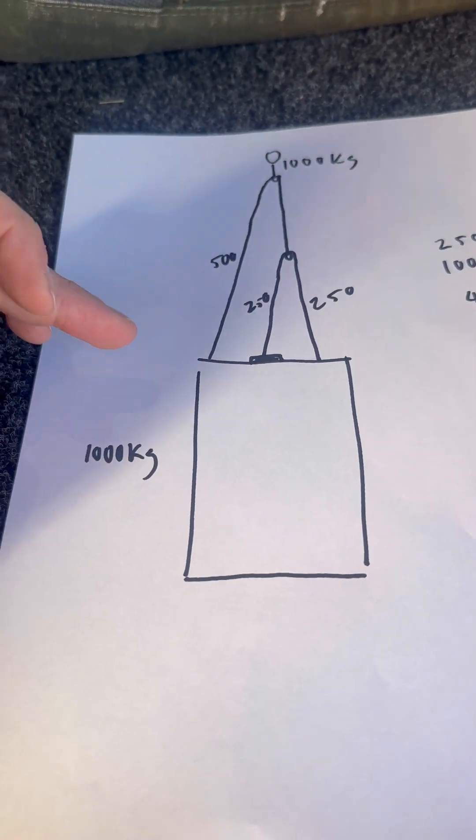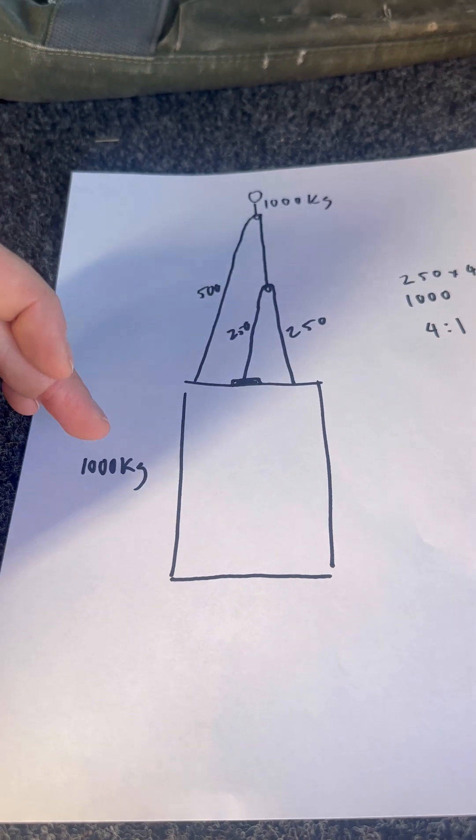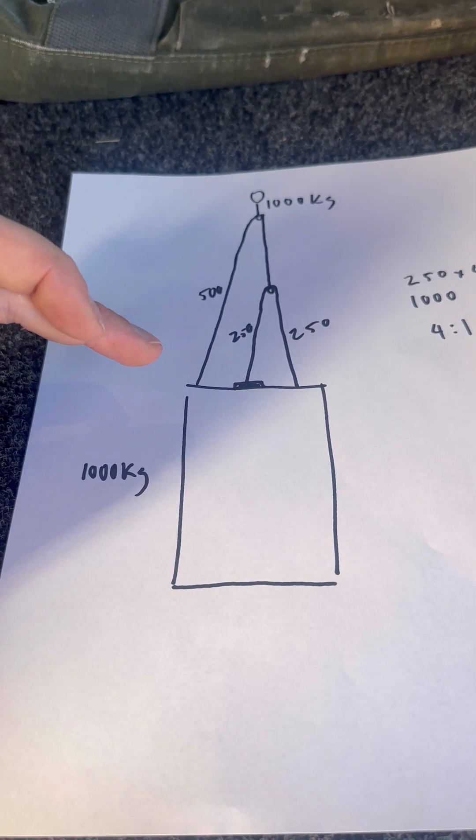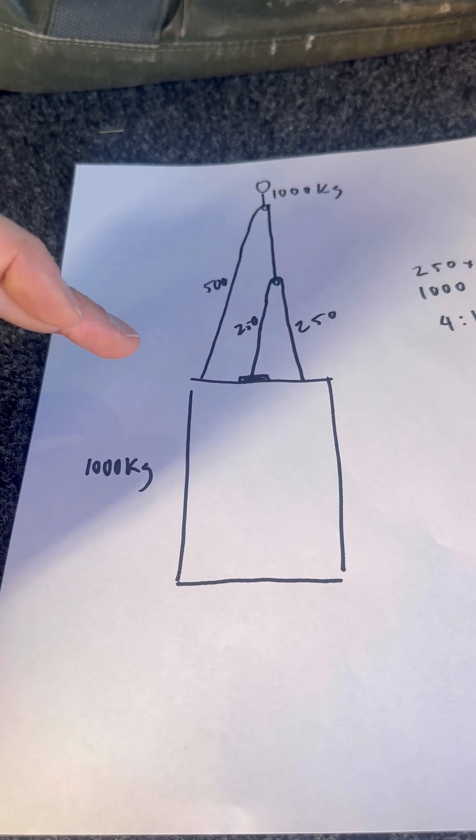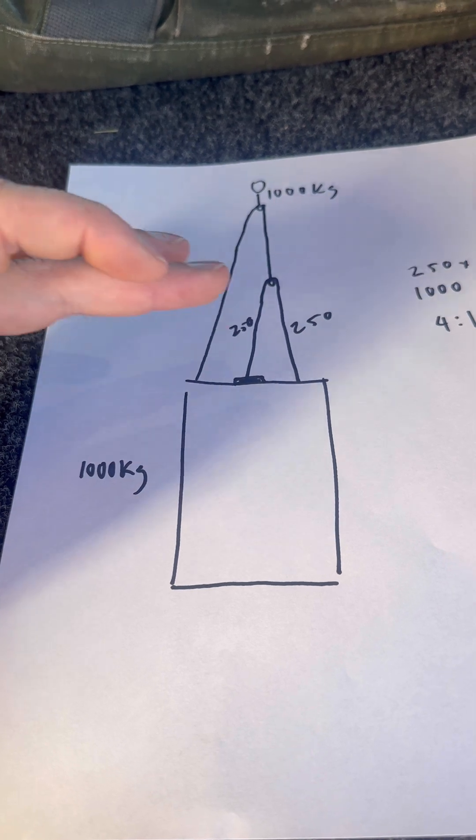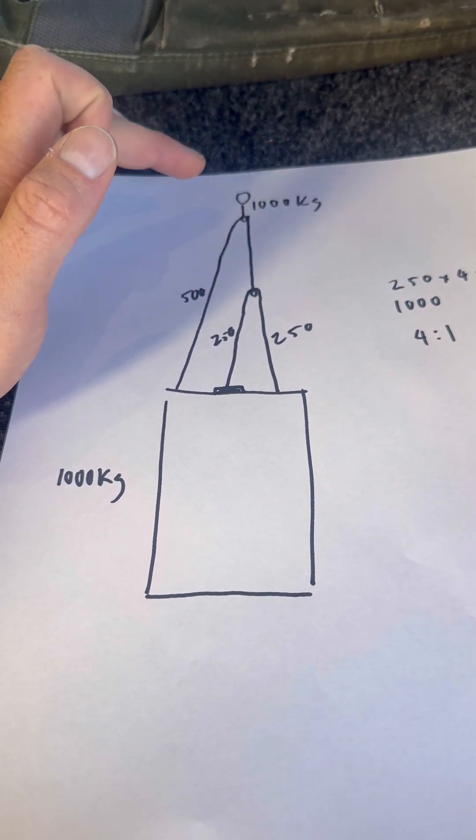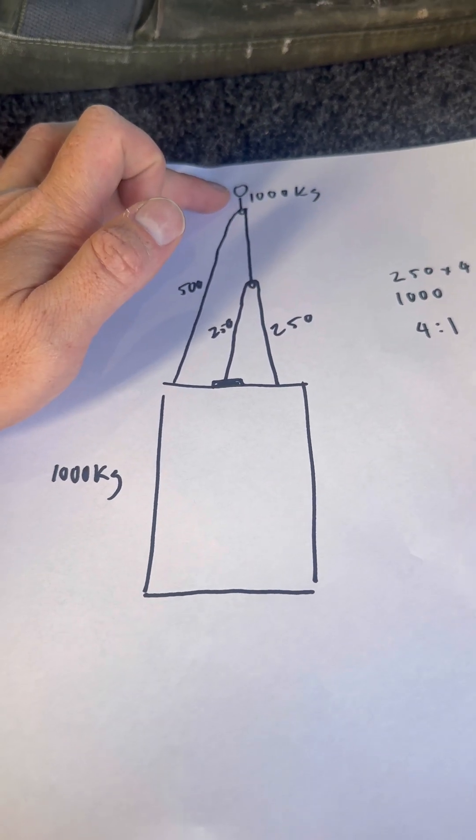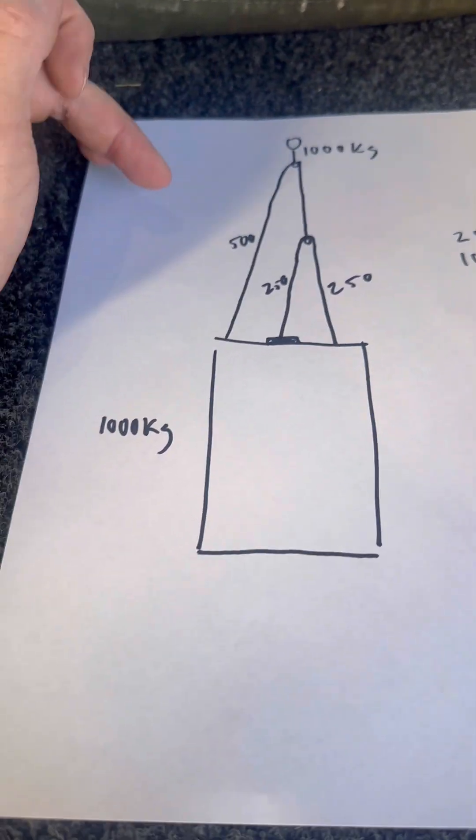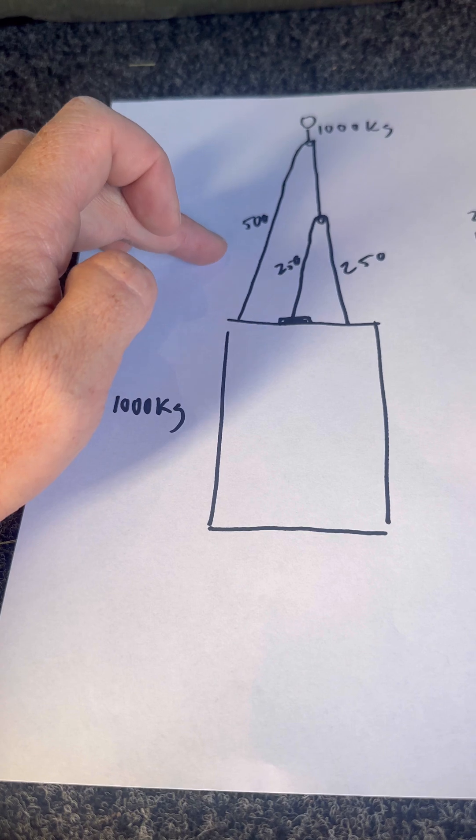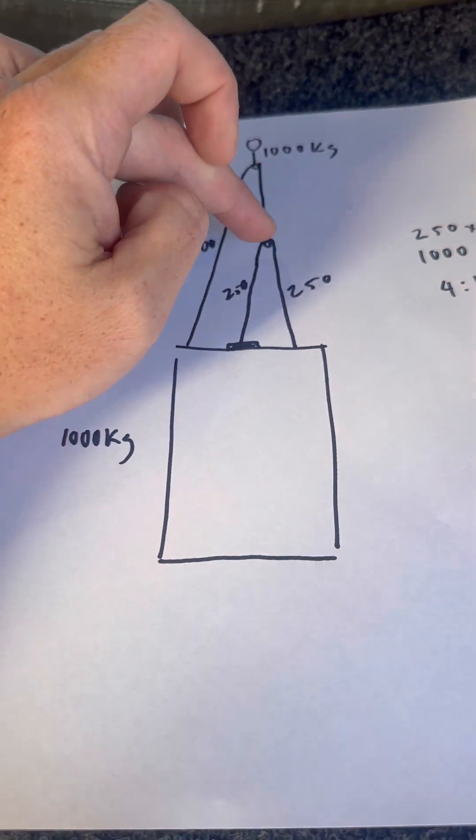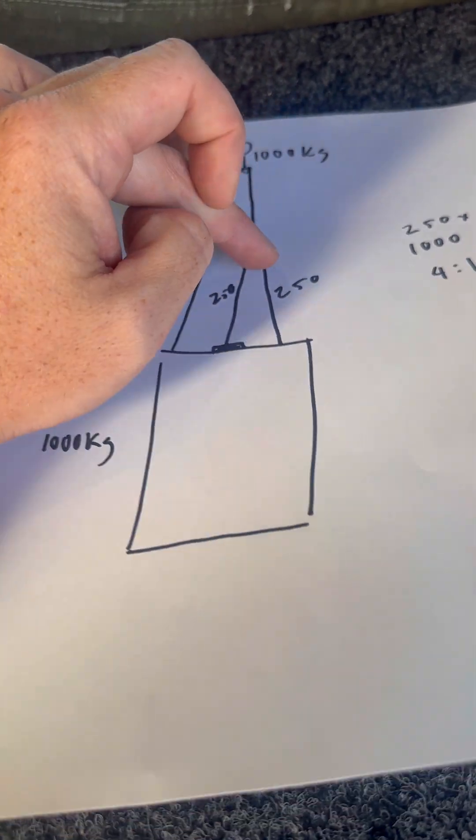Okay, so this looks complicated, but it's not really as complicated as it looks. It's just what's called a Spanish Burton. Okay, it's just a slight adjustment on what we've just done. So again, 1,000 kilograms here, 1,000 kilograms of our anchor point there, which is our equal and opposite reaction. Now, our original 500 kilo line is now going to another second line.